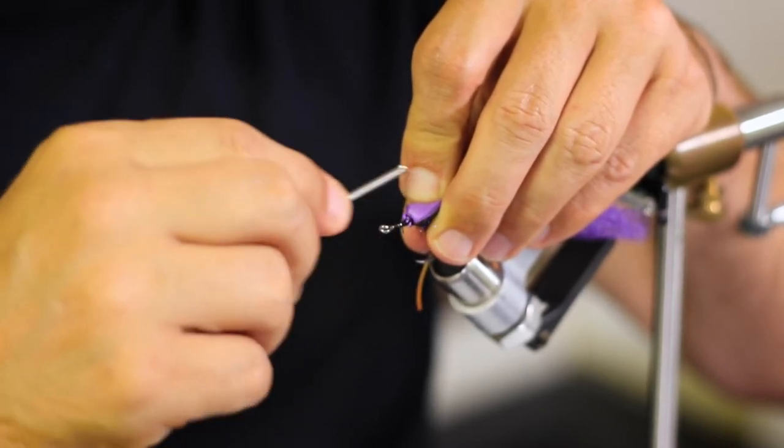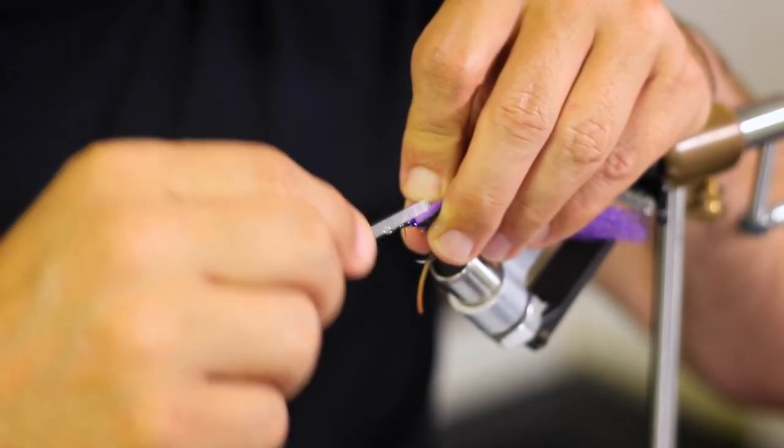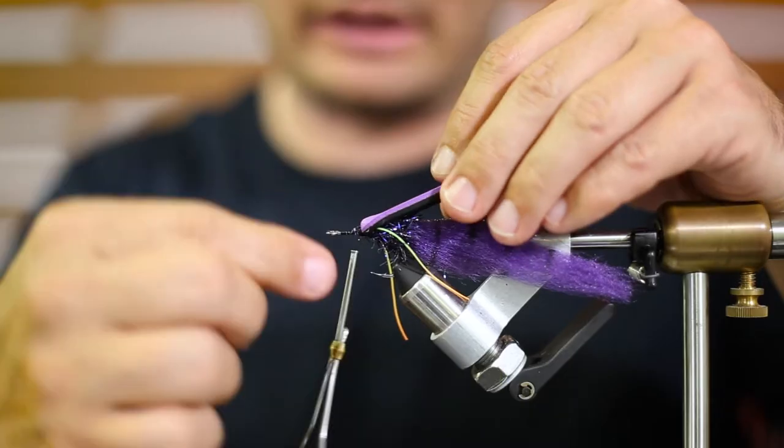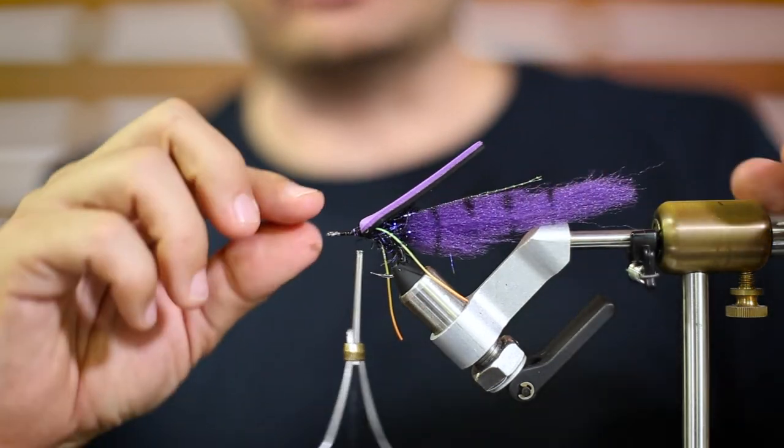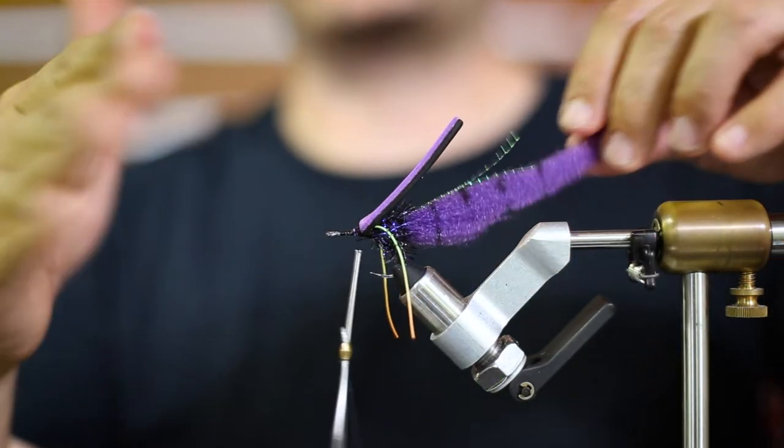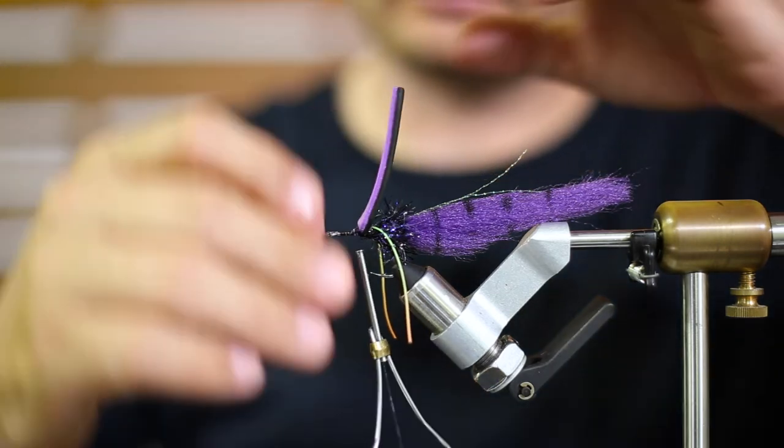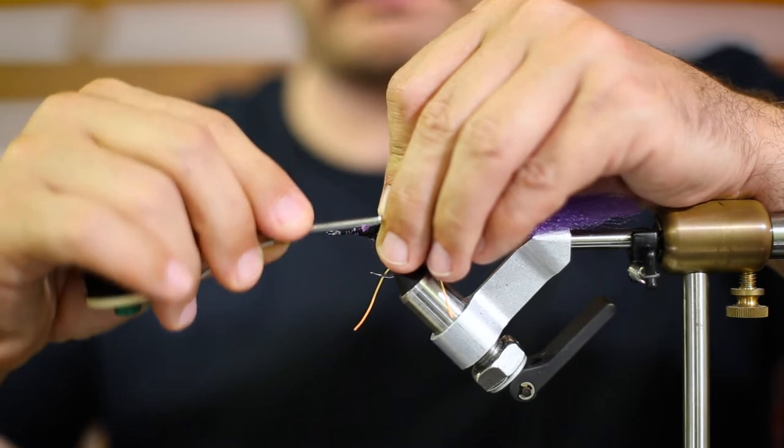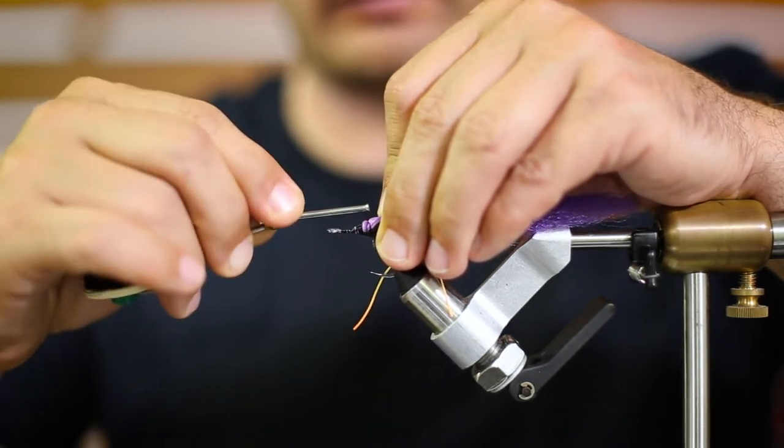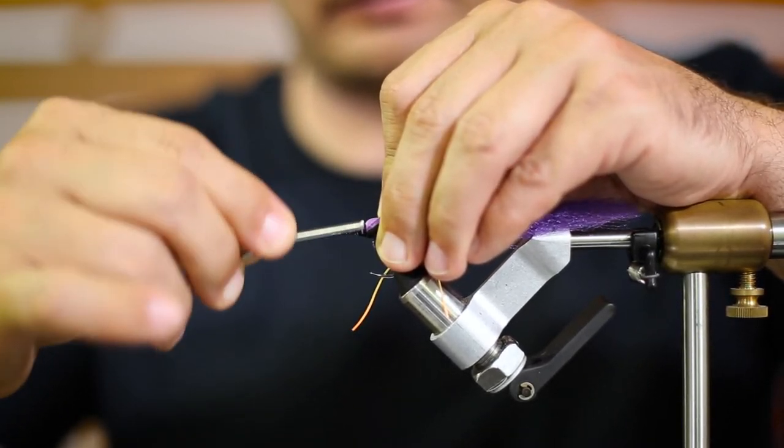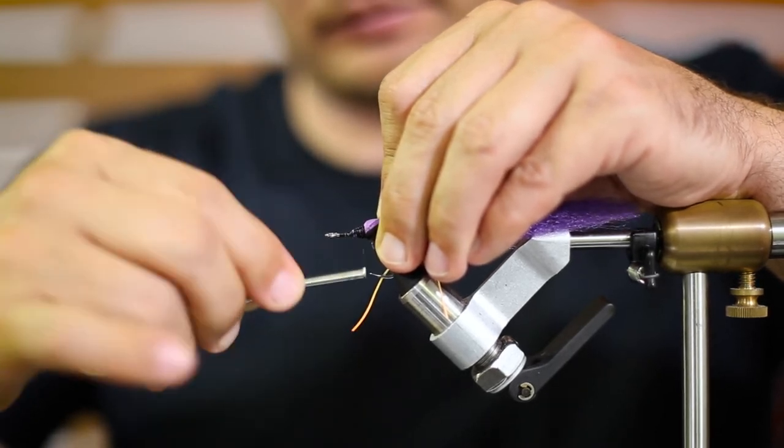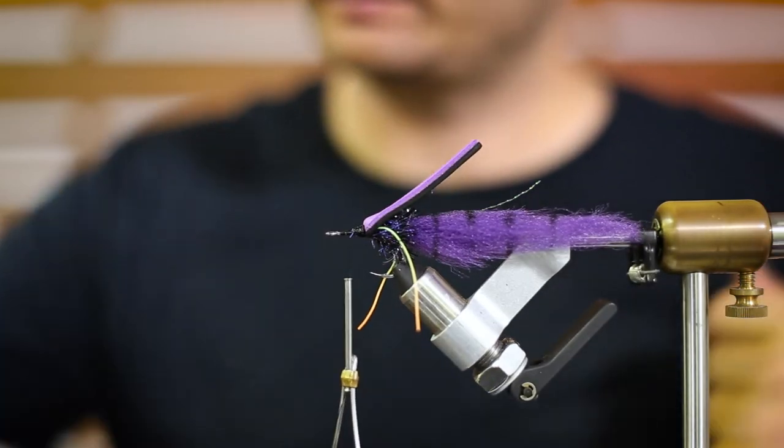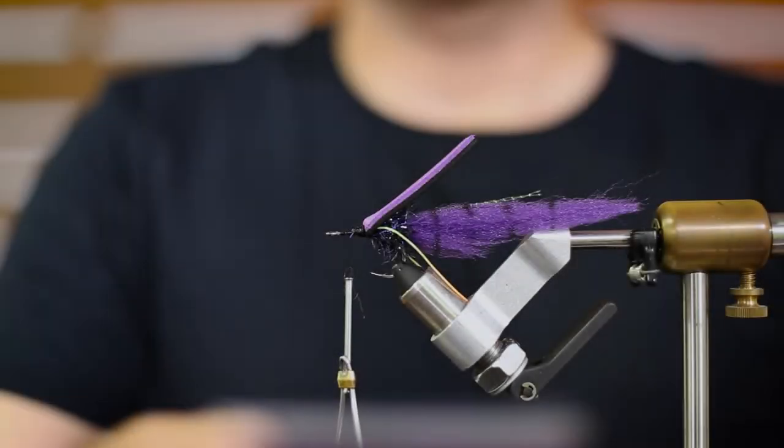Just kind of push it down and tie it down. It's going to kind of squish the foam. I think that's perfectly fine. You just don't want it to spin. If the foam spins around the hook, it can cause it to track wrong. Got a lot of thread on there. That's perfect.